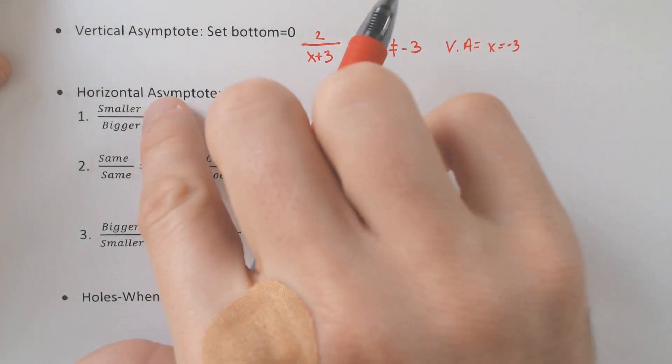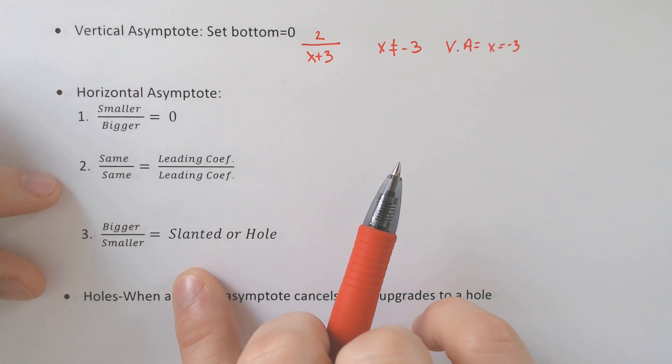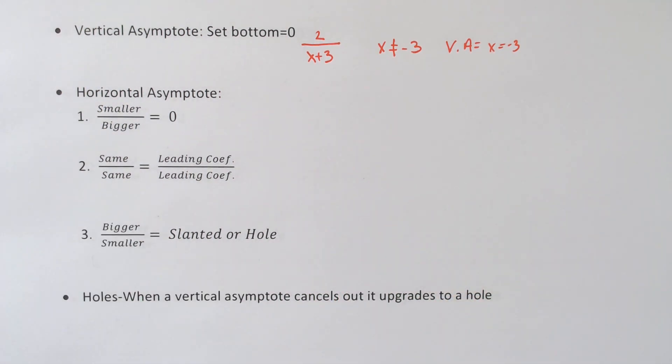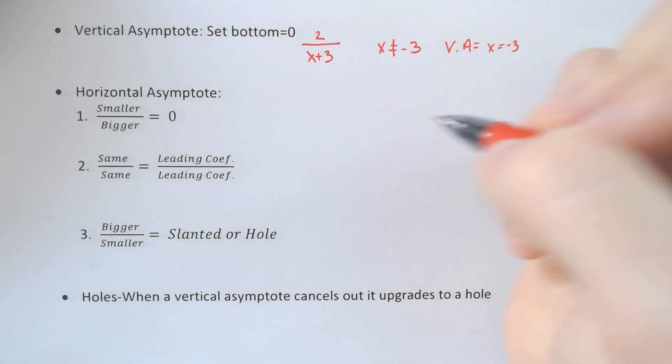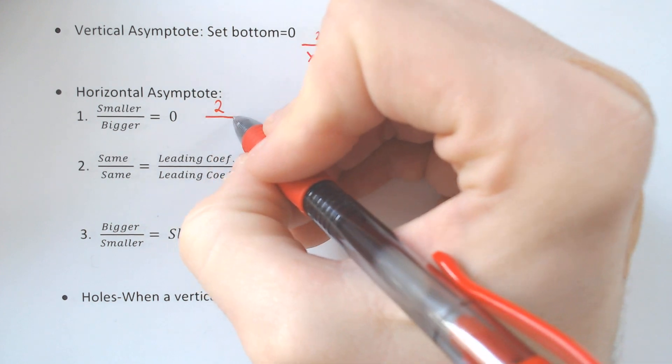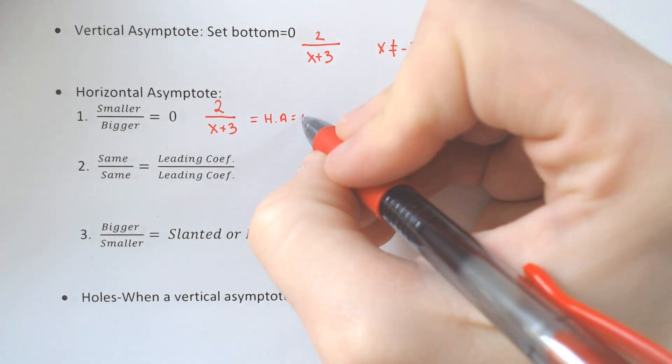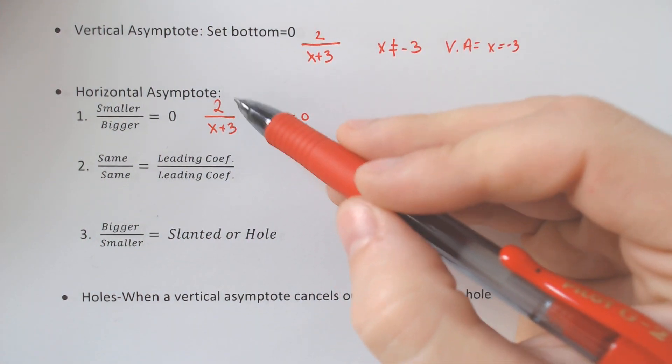Horizontal asymptotes, you will have to memorize this part, hopefully you'll have scenario 1 or scenario 2, and all of these smaller over bigger is in relationship to the exponents. For example, in our first example, where we had 2 over x plus 3, the horizontal asymptote would be 0, because you have a smaller exponent, you have x to the 0, you don't even have an x on the top of the fraction,